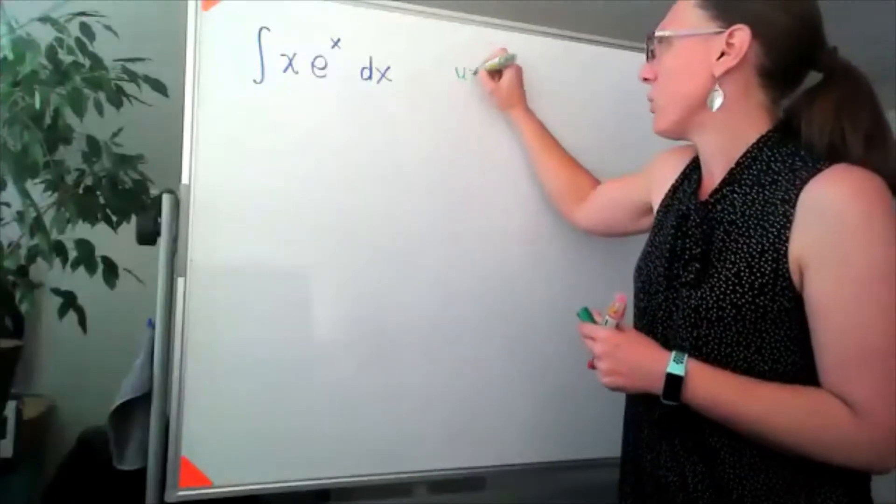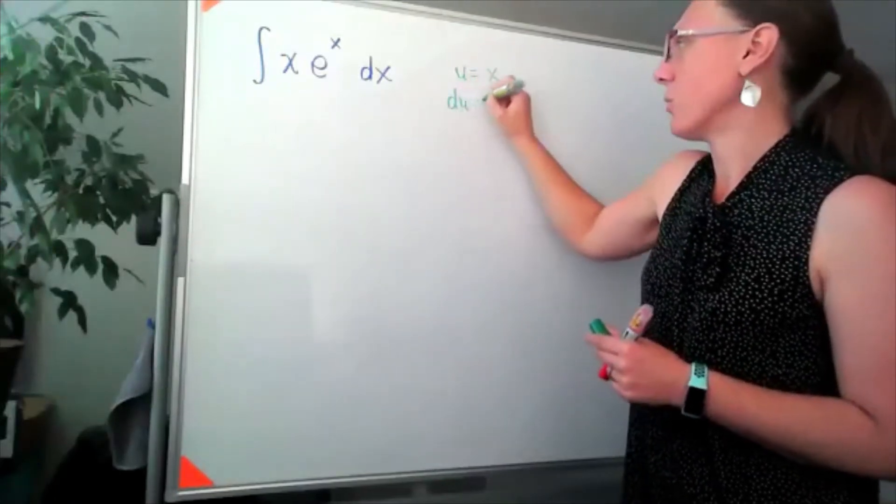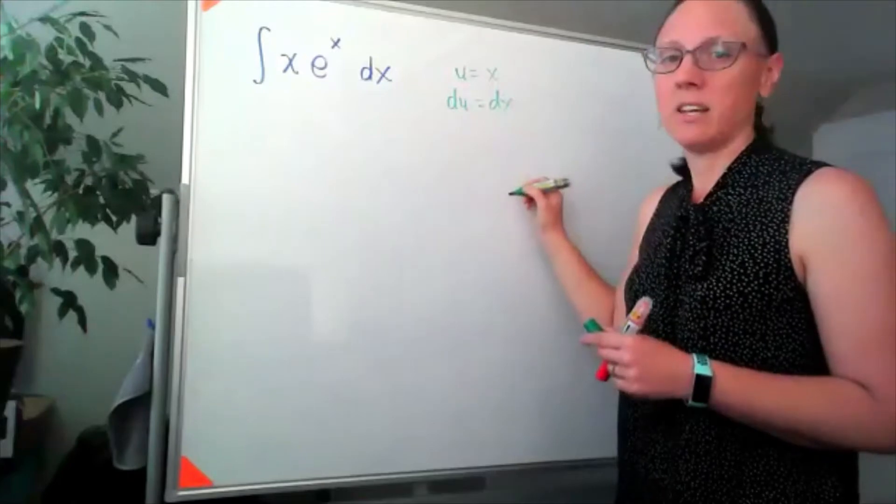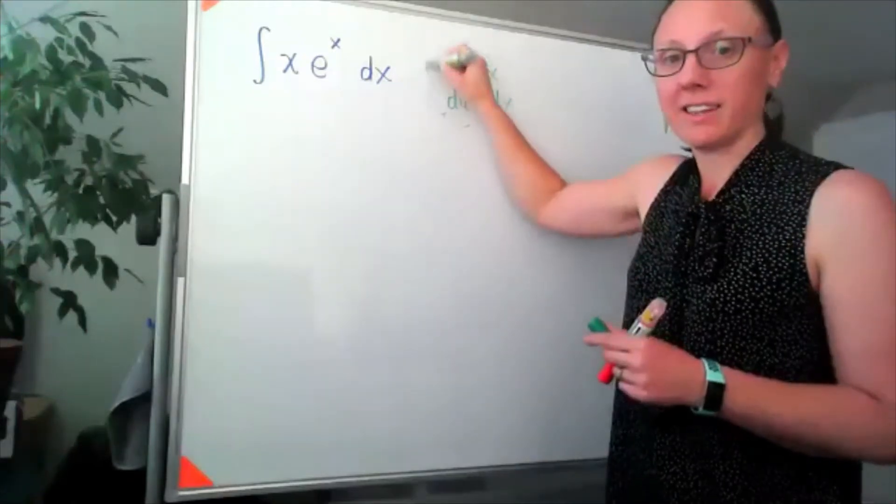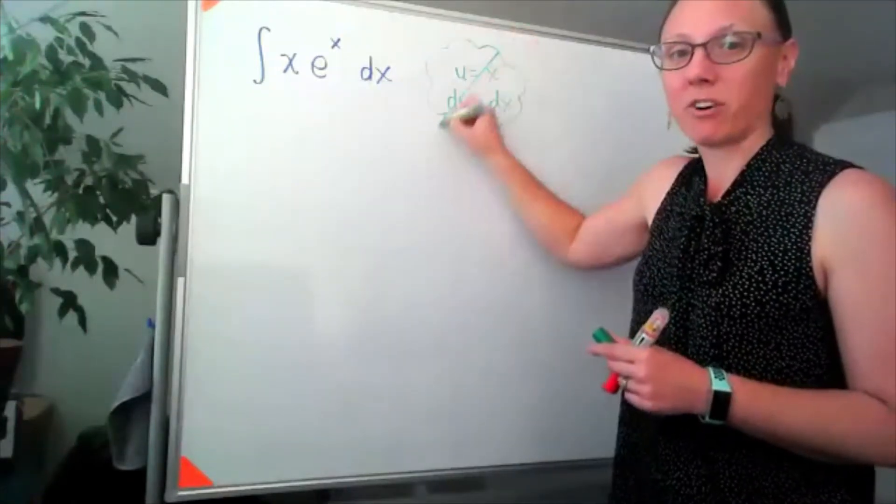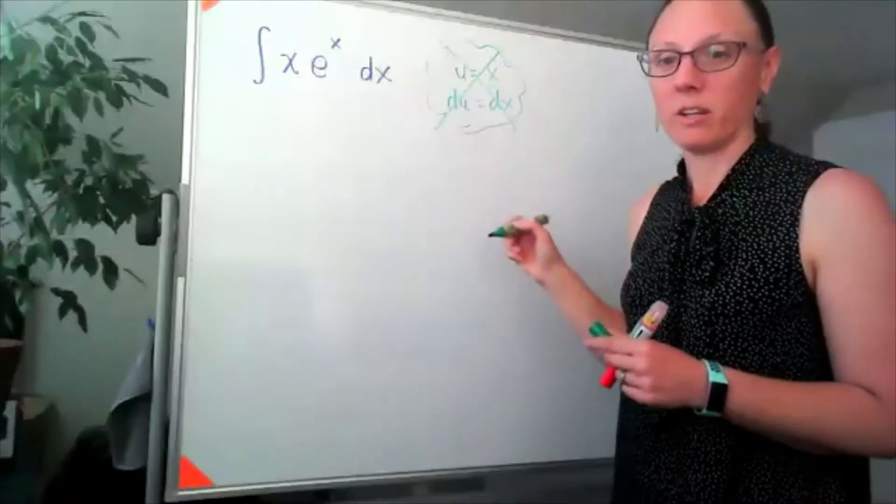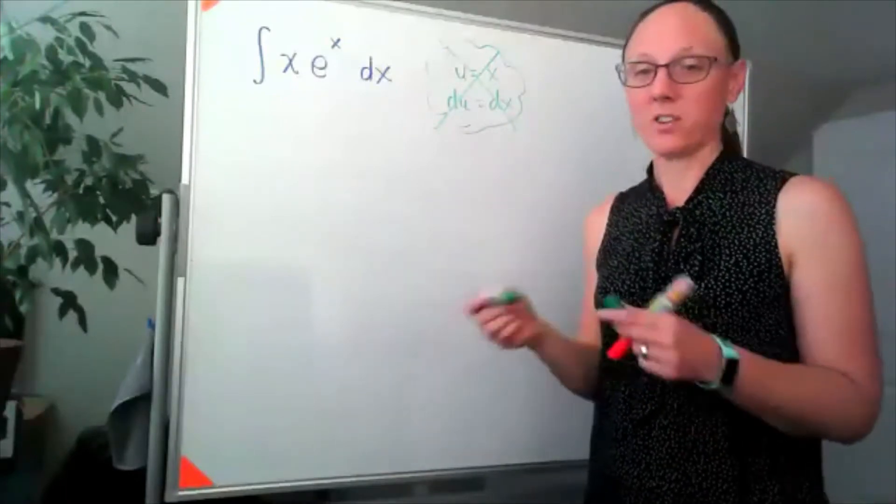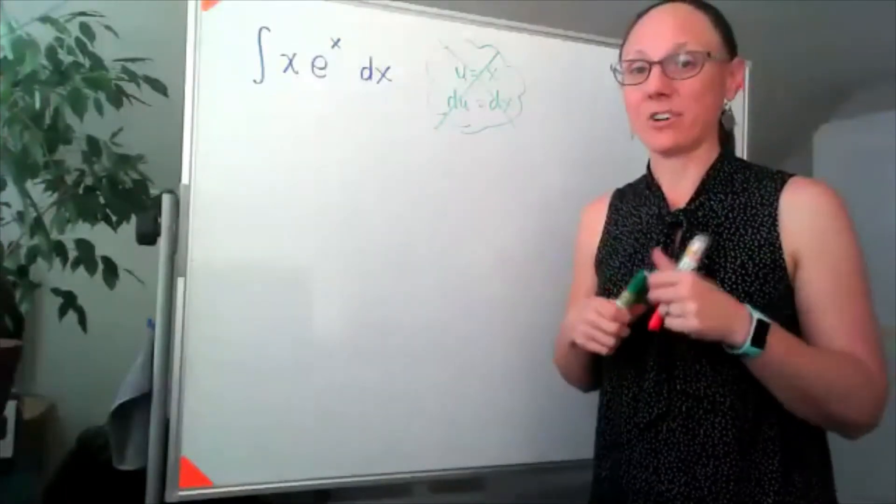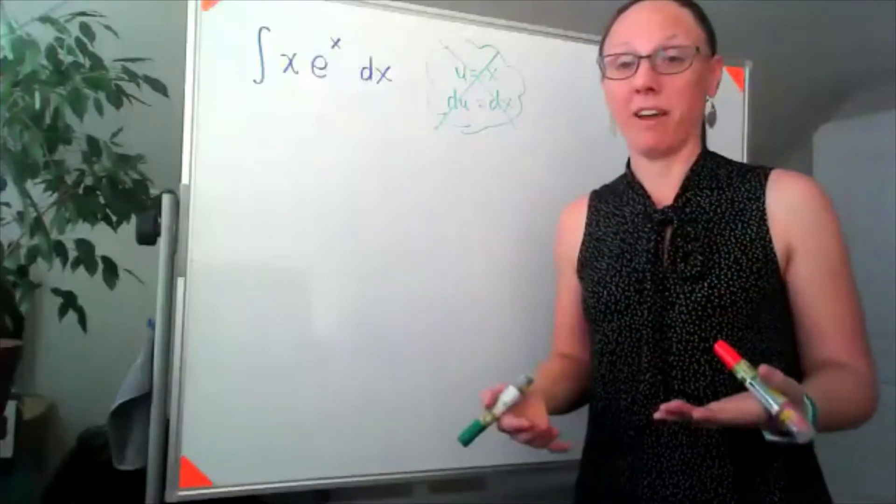Well, if u equals x, then du equals dx. Fun fact: this is never a u-substitution. All that would do is swap your letters out. It doesn't actually do anything towards simplifying the problem.